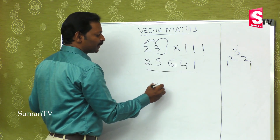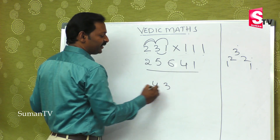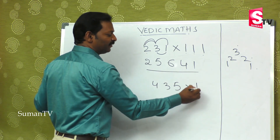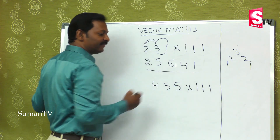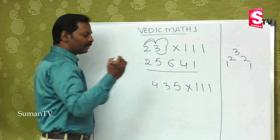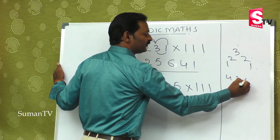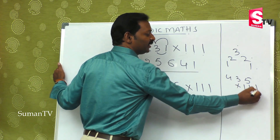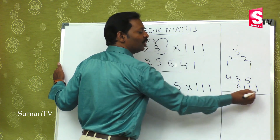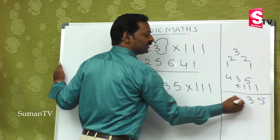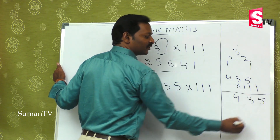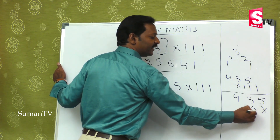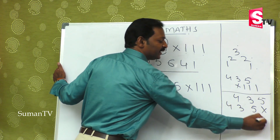4, 3, 5 is multiplied by 111. We will do this process: 1 times 5 is 5, 1 times 3 is 3, 1 times 4 is 4. Leave one place: 1 times 5 is 1, 1 times 3 is 1, 1 times 4.